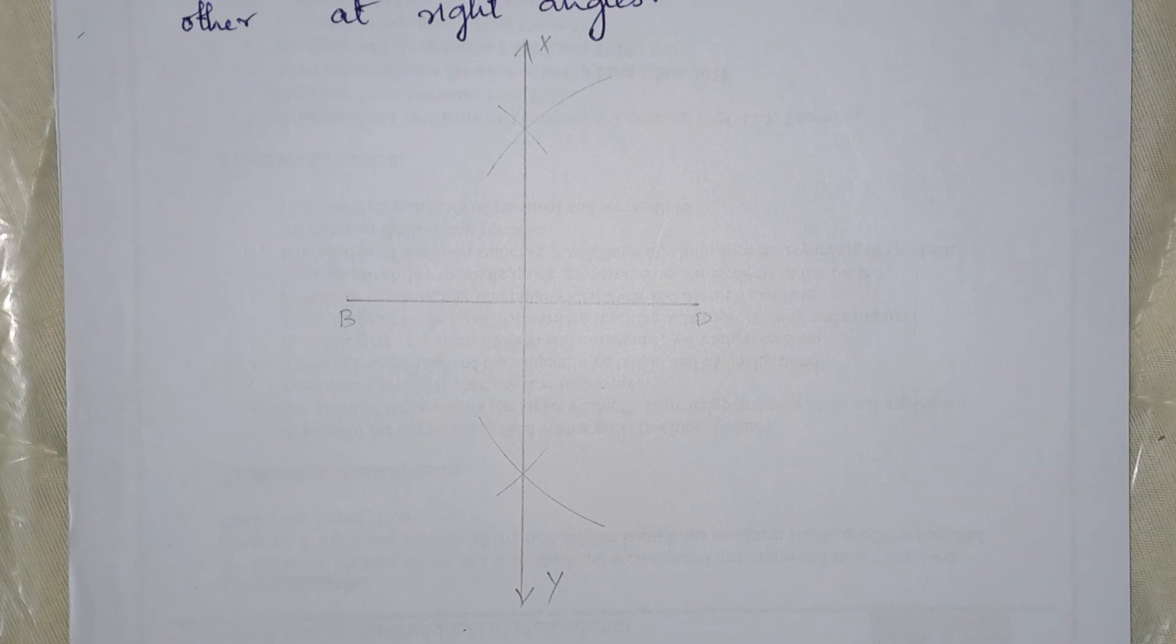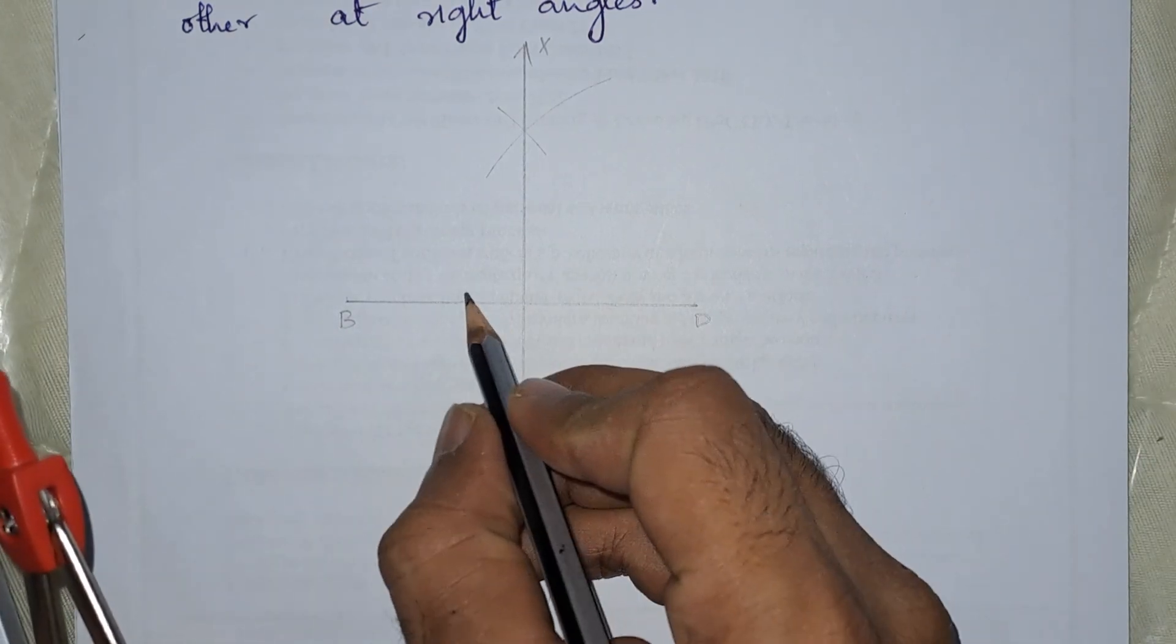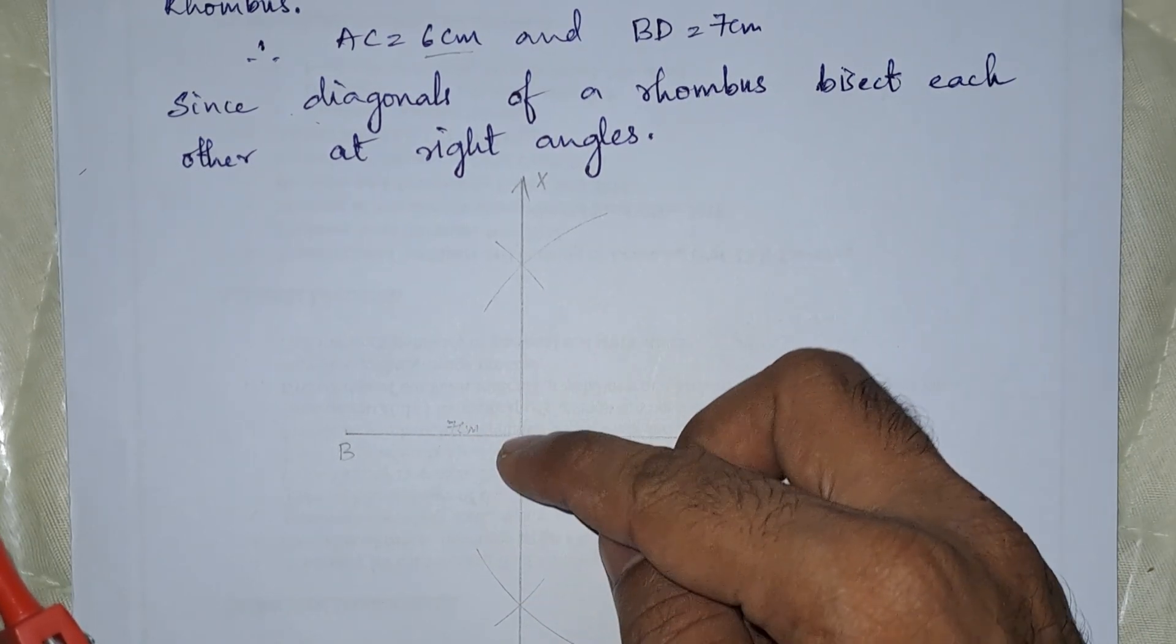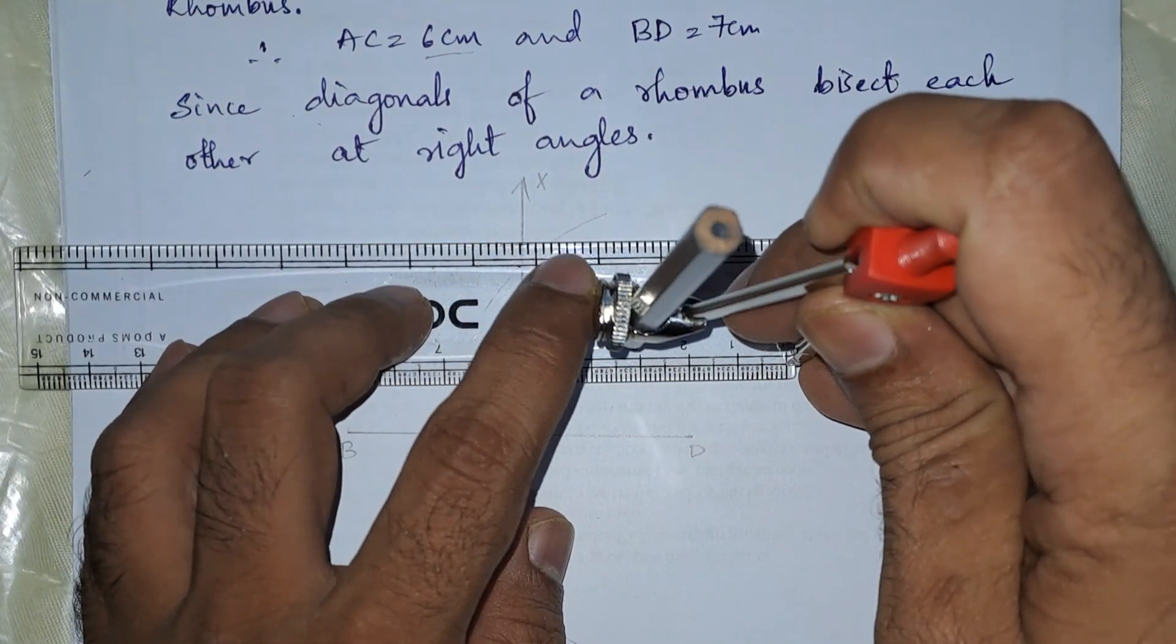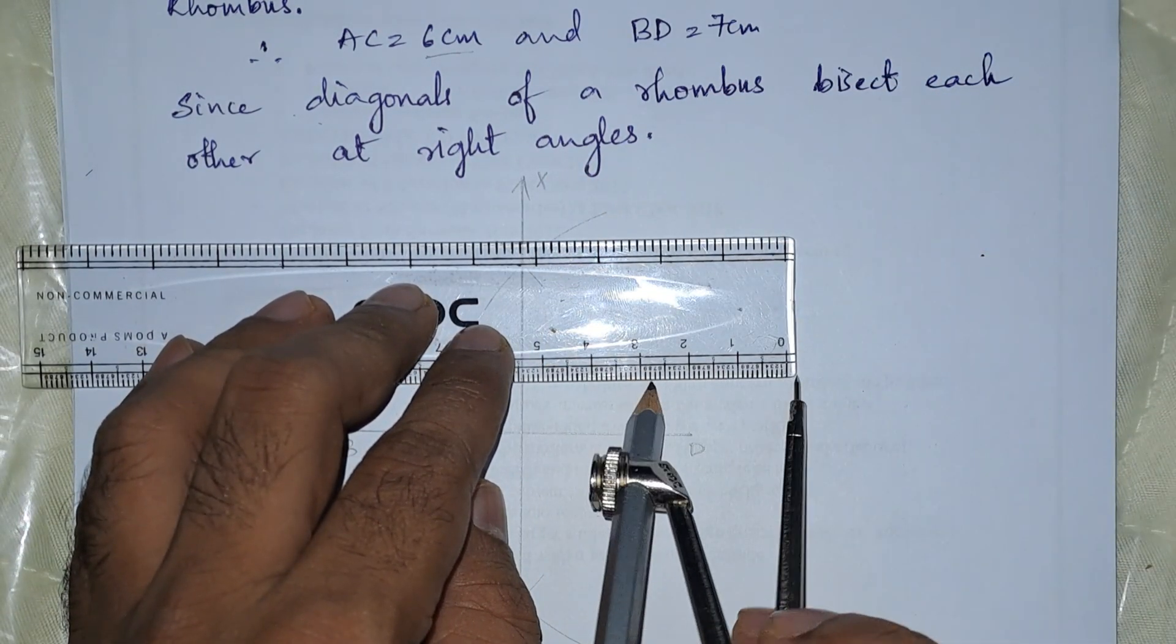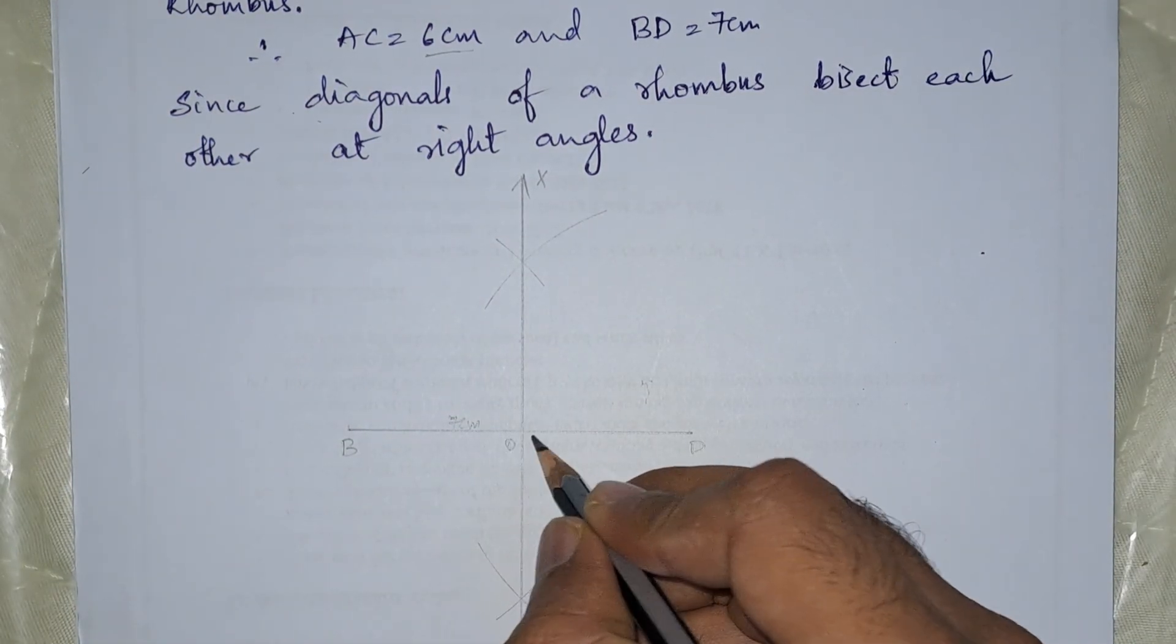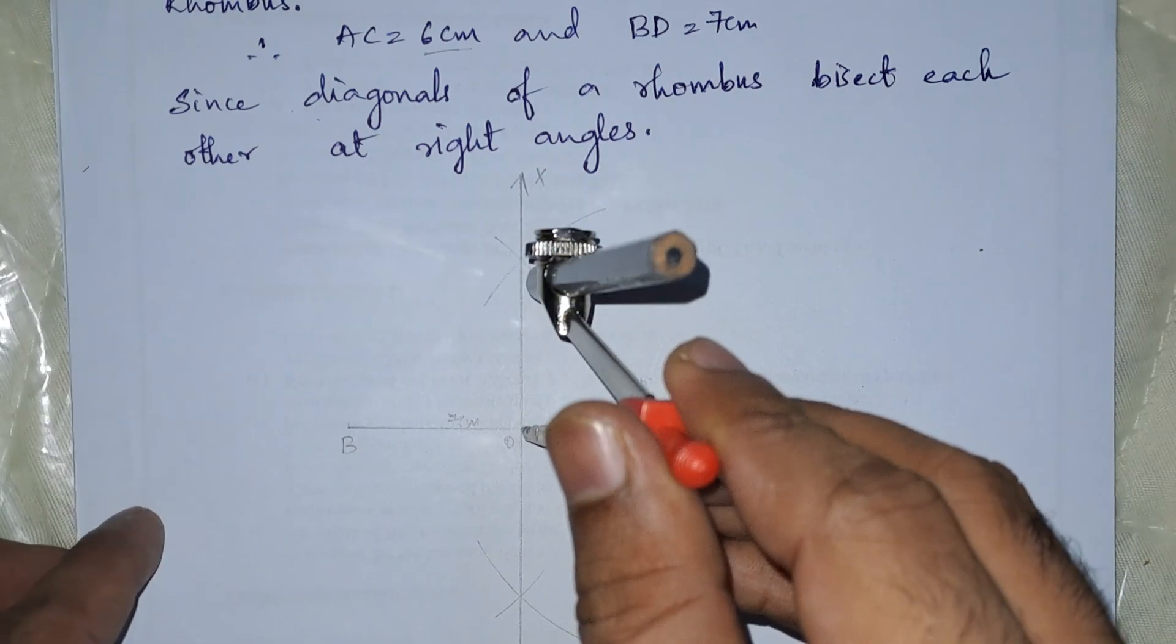Now with the help of a protractor, we know that this line segment is of 7 centimeters. For 6 centimeters, we know that 3 centimeters comes above this line and 3 centimeters comes below this line. For that, first we will take the radius of 3 centimeters. So this is the radius of 3 centimeters.